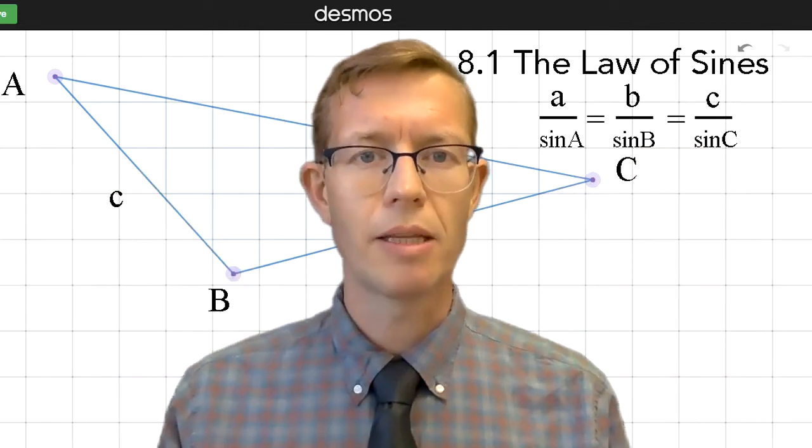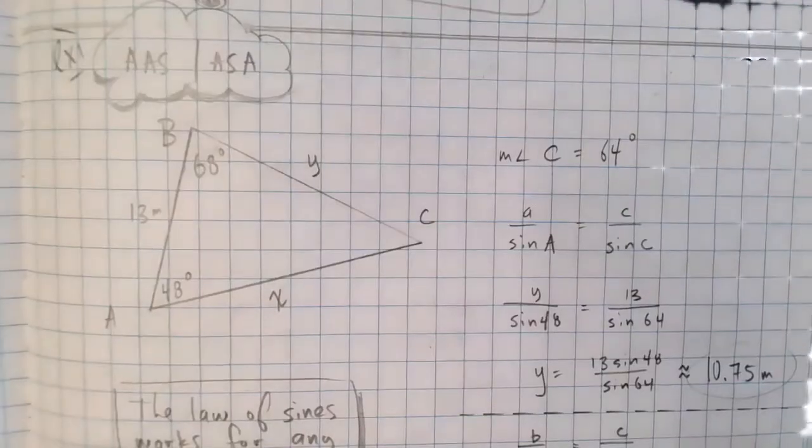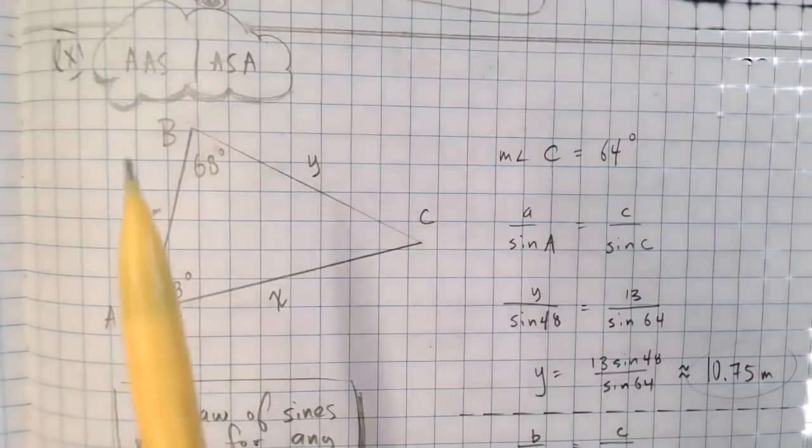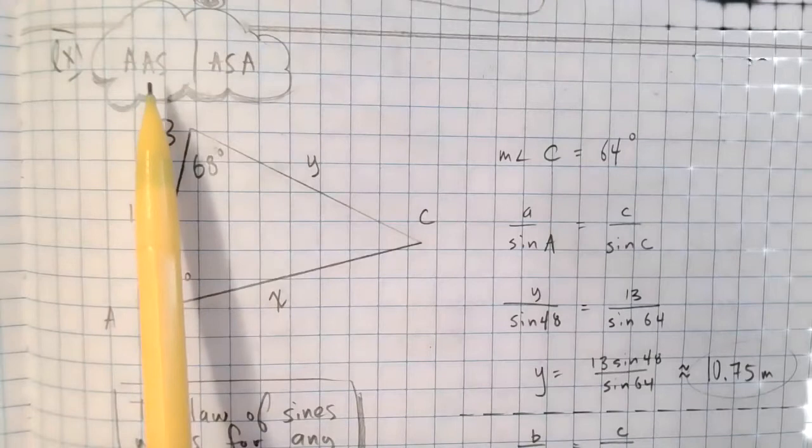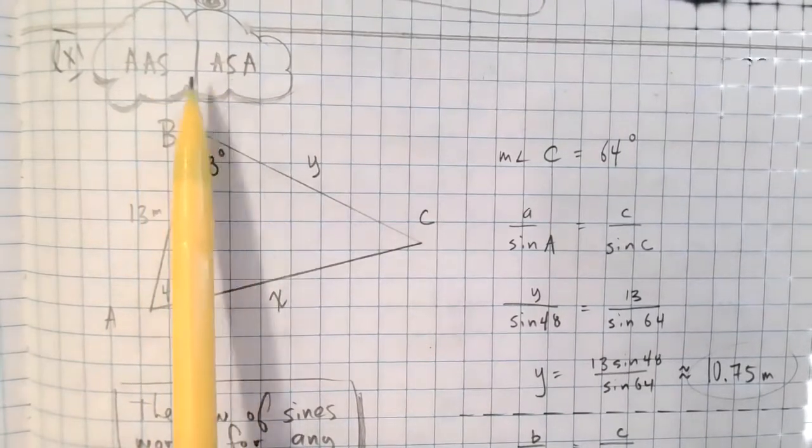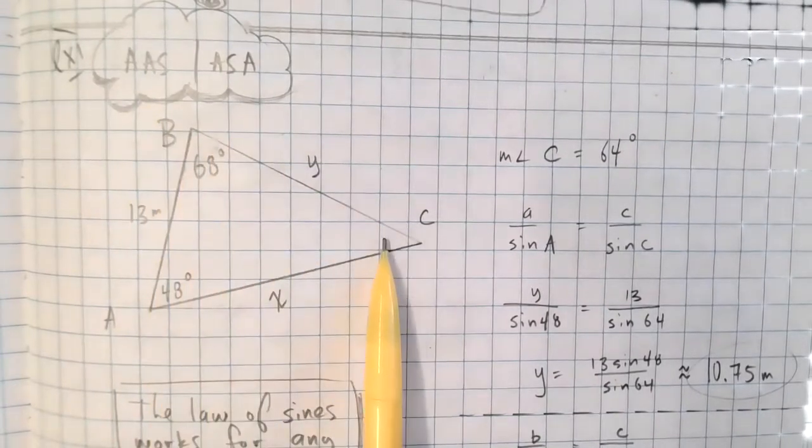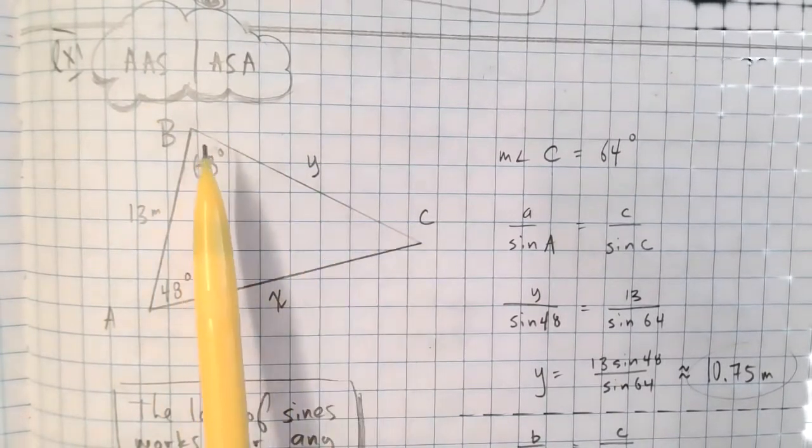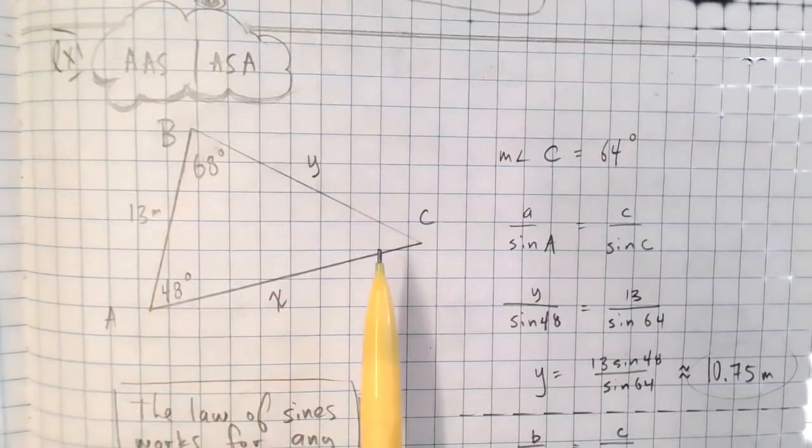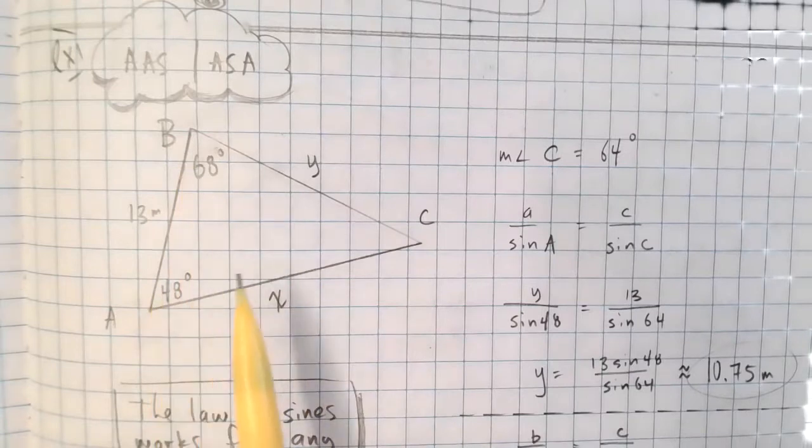But you probably get the picture by now. The problems we worked with yesterday are ones we had two angles and a side included. And it doesn't matter for these types of problems if the side is in between the two angles or if it's angle-angle-side. It's pretty easy to find that third angle just by adding these up and subtracting from 180 because all the measures of a triangle add up to 180 degrees.